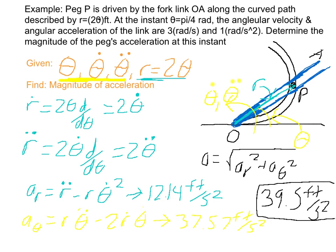For these calculations, r-double-dot equals 2 times 1 radian per second squared, which is essentially 2 ft/s² since radians are unitless — so the units work out. You can plug everything in and solve for yourself. Hopefully you learned from this lesson, and if you have any questions, don't be afraid to ask. Thanks!